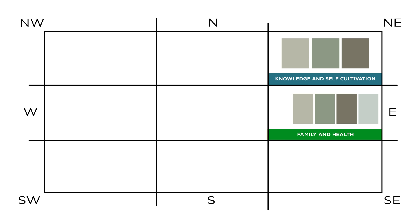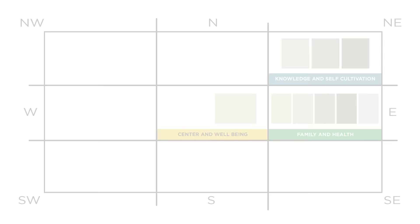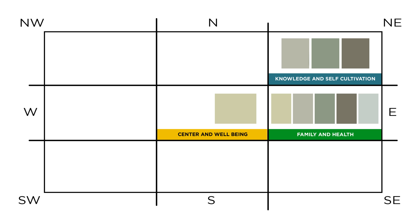Quiet Moments is a little bit more on the muted side, so it would still work beautifully in the family and health wood corner, but I would probably stay away from the northeast corner since it's a little more desaturated. Fernwood Green has a yellowish tint to it — it's a mix between yellow and green, so on the bagua map it will fall between the east and center sections of your home. Moving over to Pale Moon, this buttery yellowish color would fall between your earth center and more toward the west corner, where creativity and children lie — making it the perfect color to play between those two spaces.